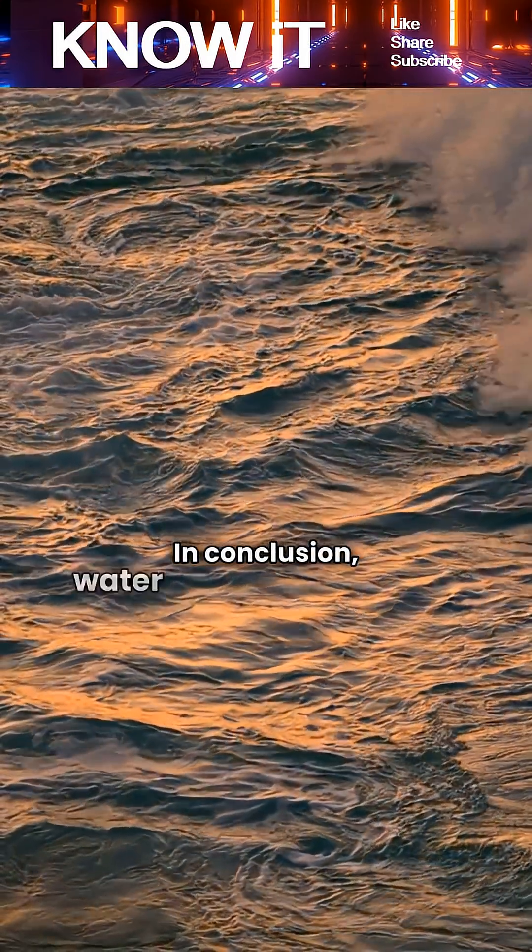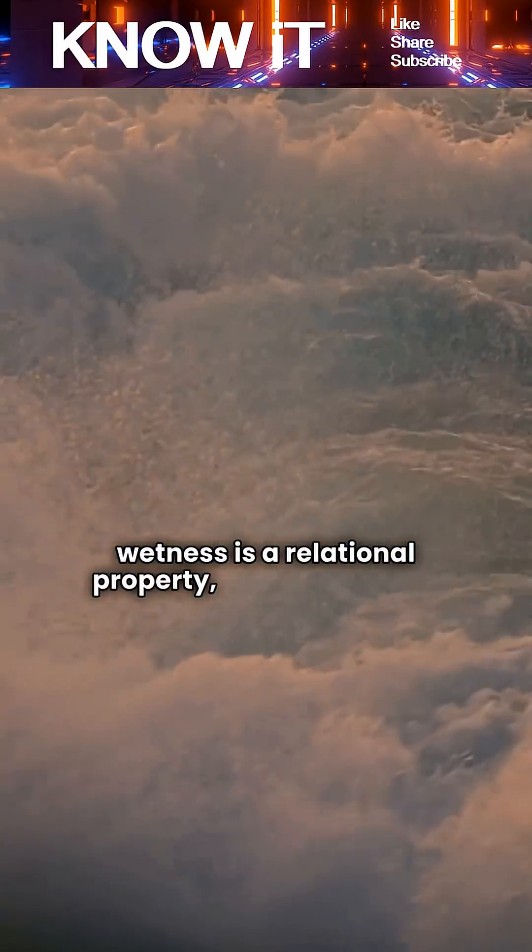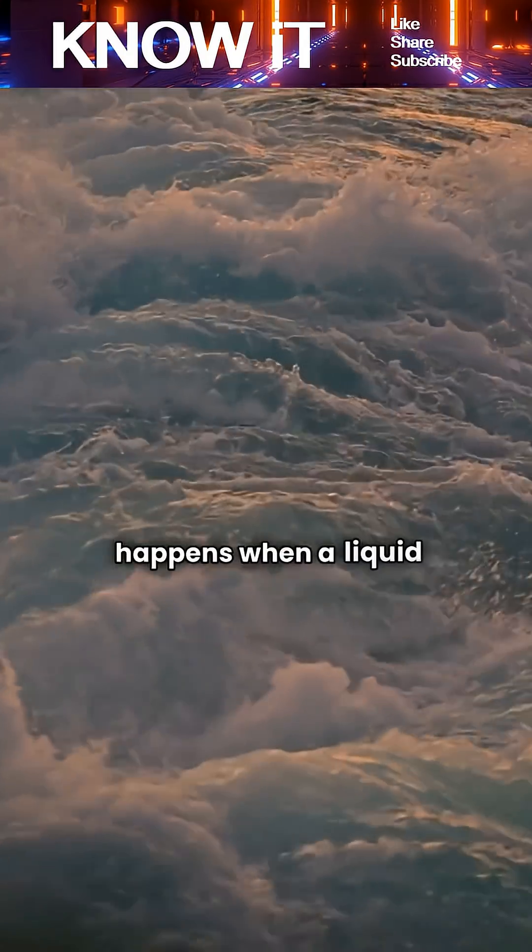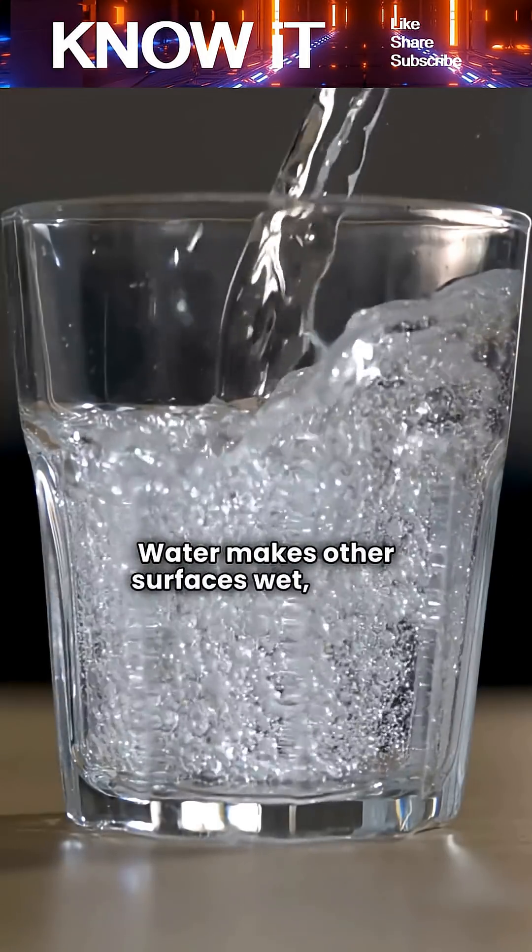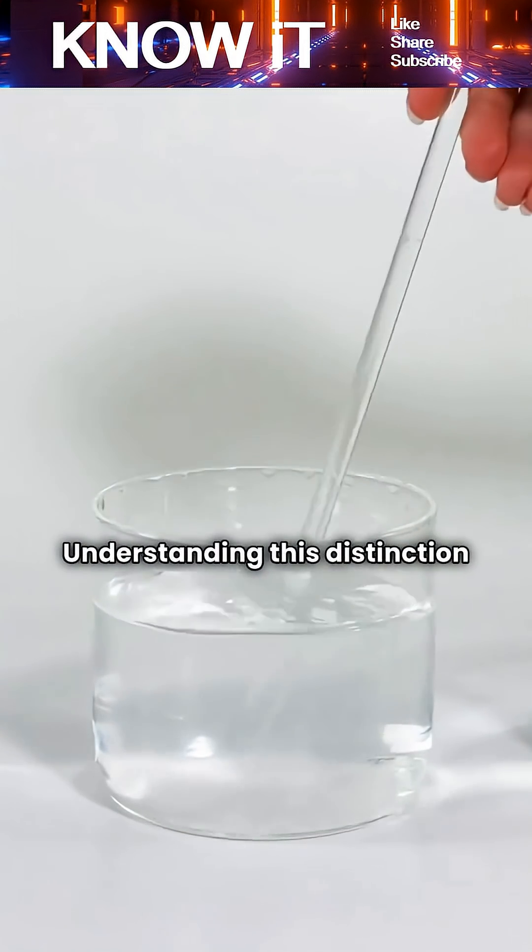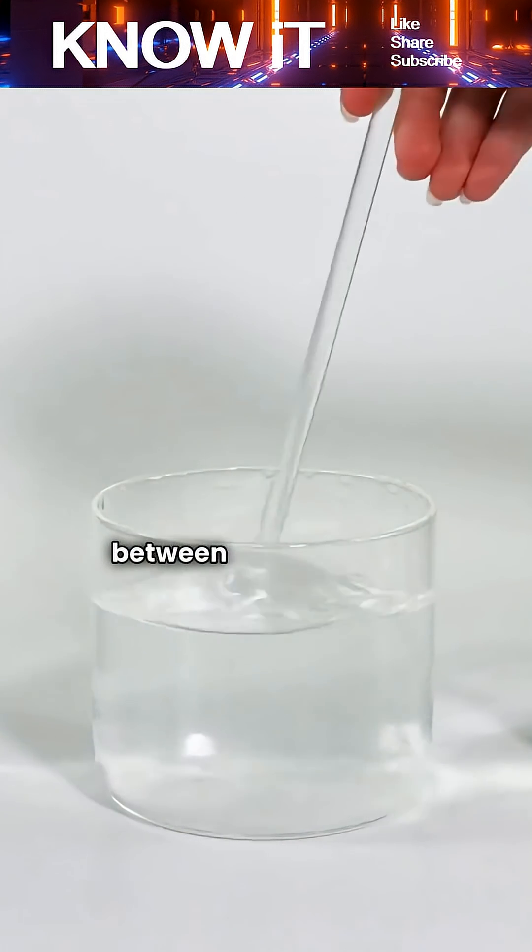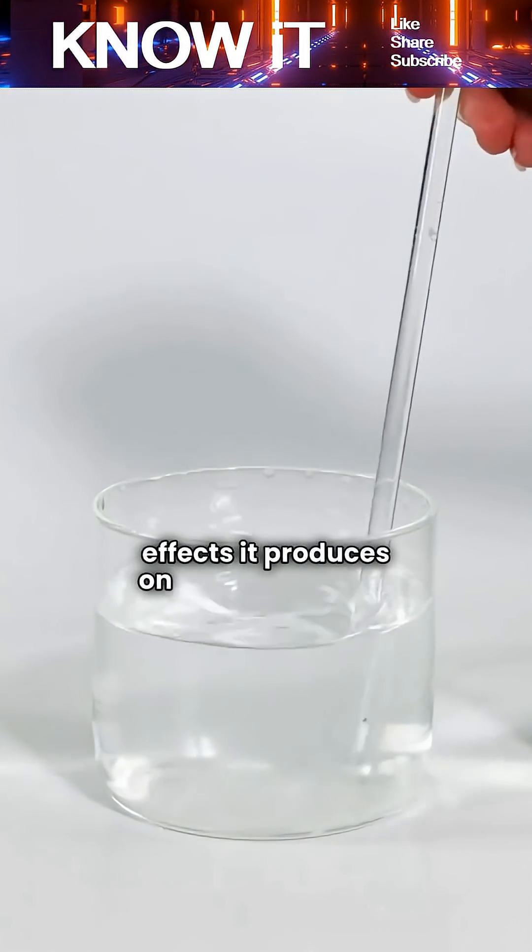In conclusion, water is not wet because wetness is a relational property, describing what happens when a liquid covers a solid. Water makes other surfaces wet, but by itself it is just a liquid. Understanding this distinction helps clarify the difference between a substance's inherent qualities and the effects it produces on other materials.